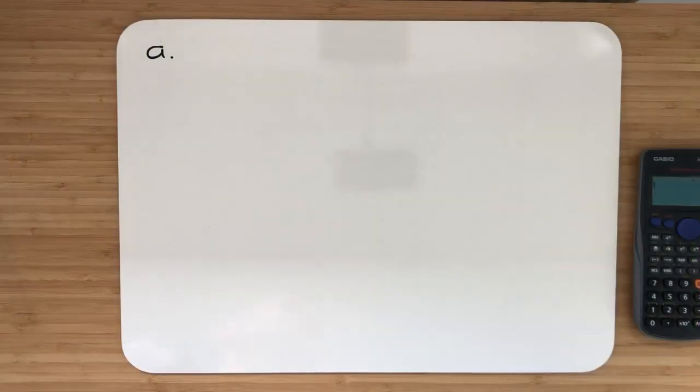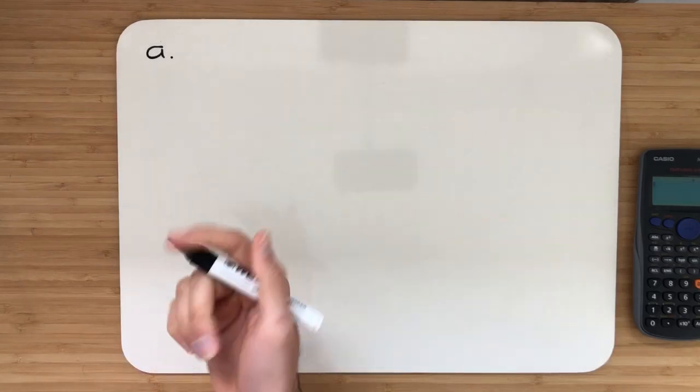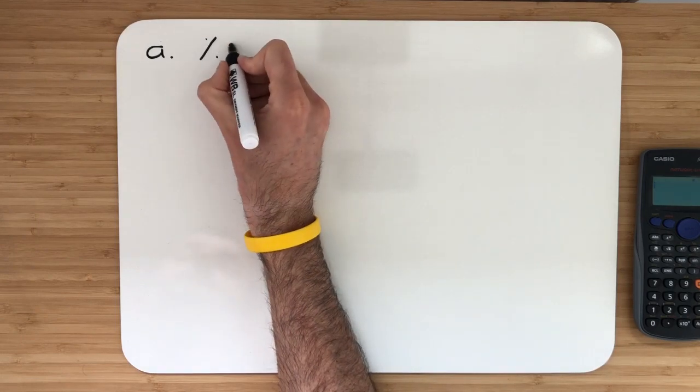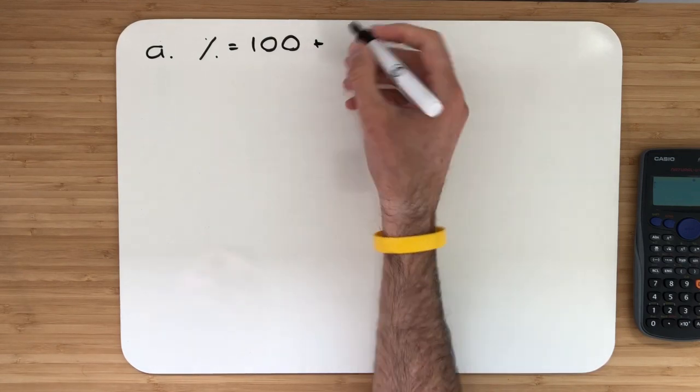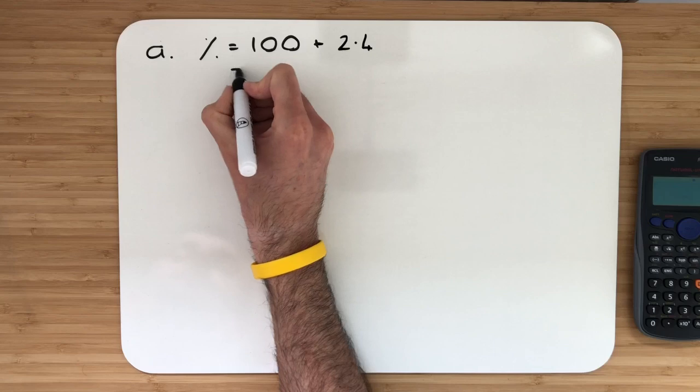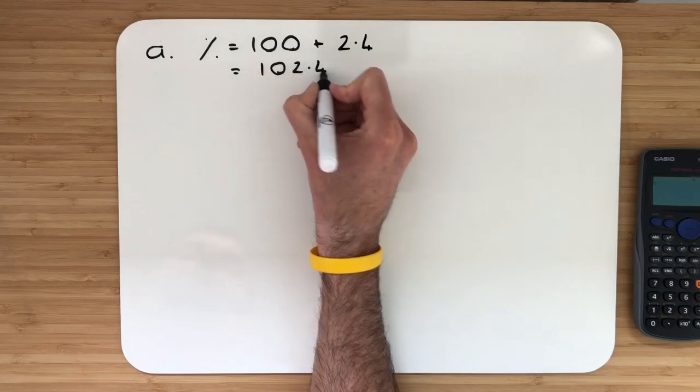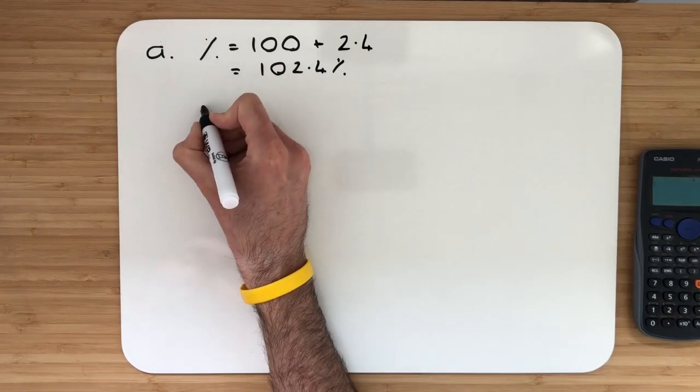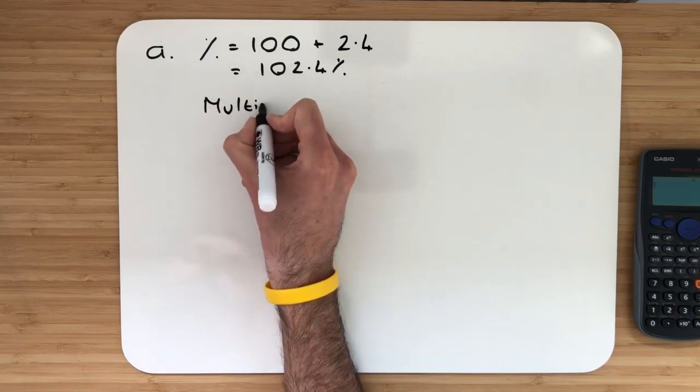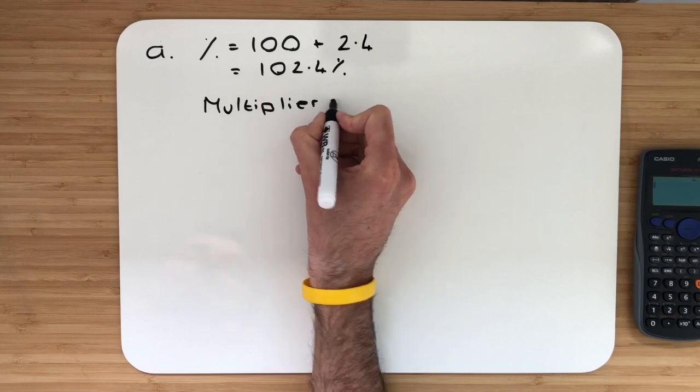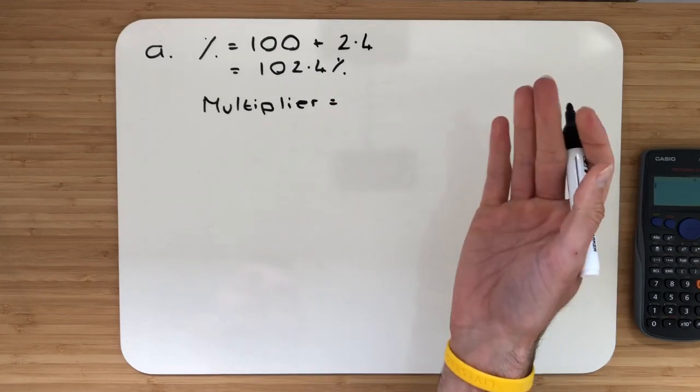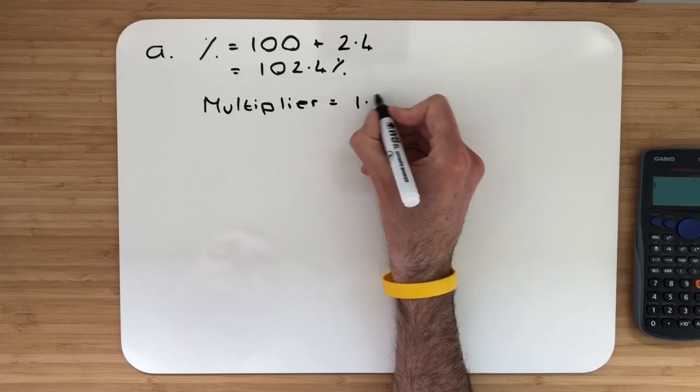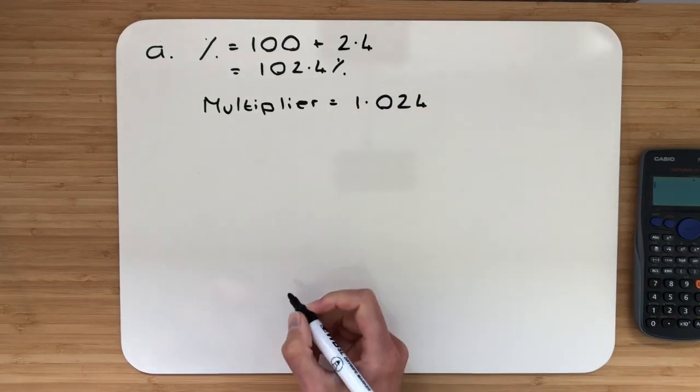In Example 1 Part A, we're looking to work out how much money Paul has in his account after 4 years. To begin with, we need to work out our percentage. We're always starting at 100%, and because it's interest, we're going to add on 2.4% to give 102.4%. From there, I'll convert it into my multiplier. A multiplier is just a decimal answer. Percent means per hundred, so if I want to convert 102.4% into a multiplier, I just divide by 100, which gives me 1.024.